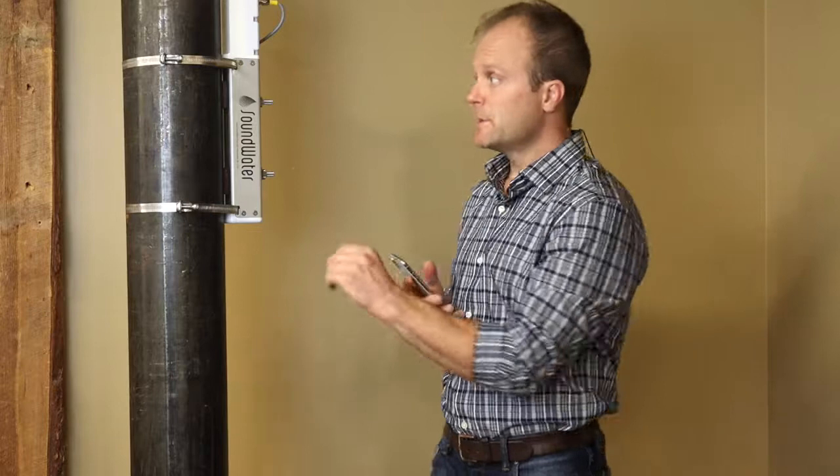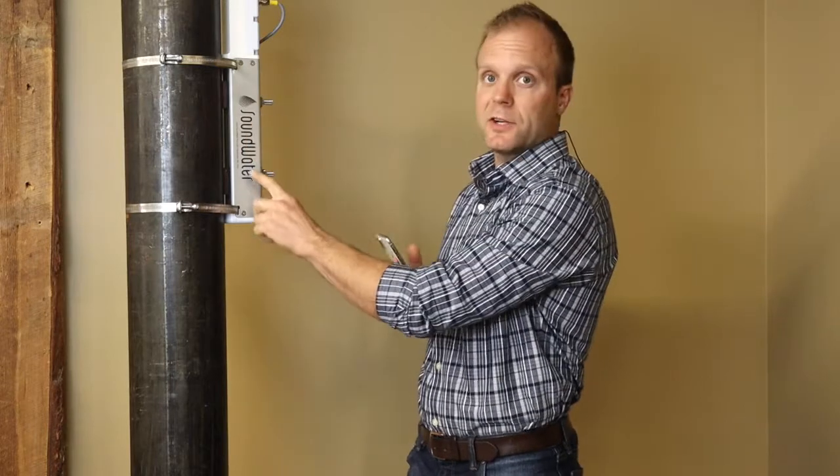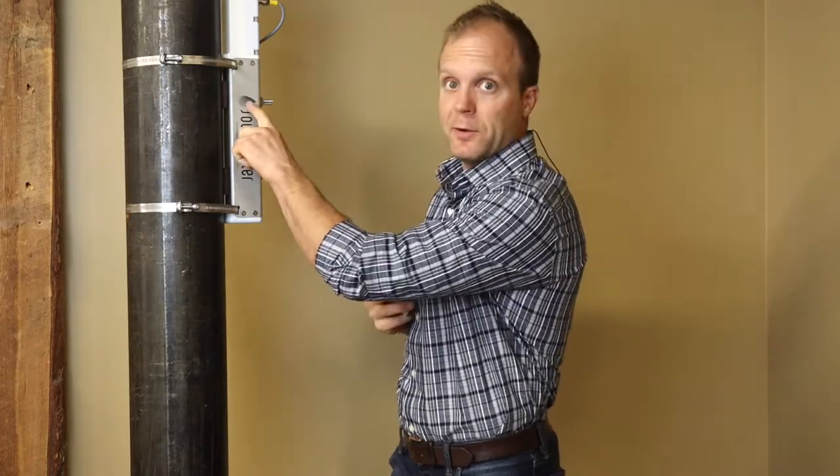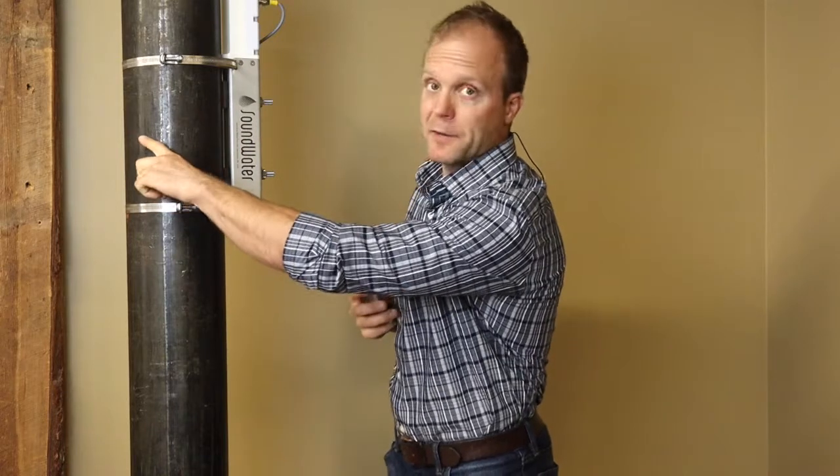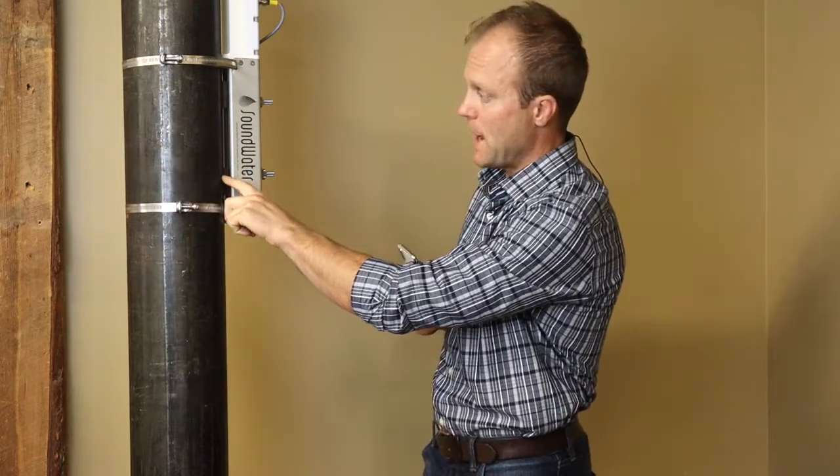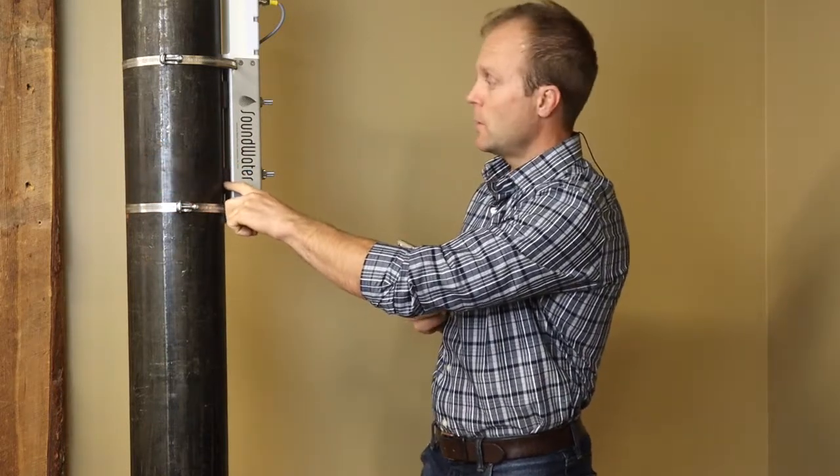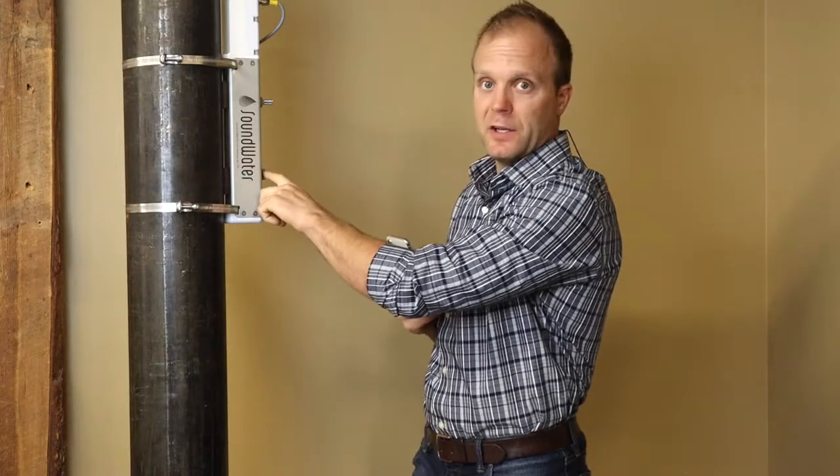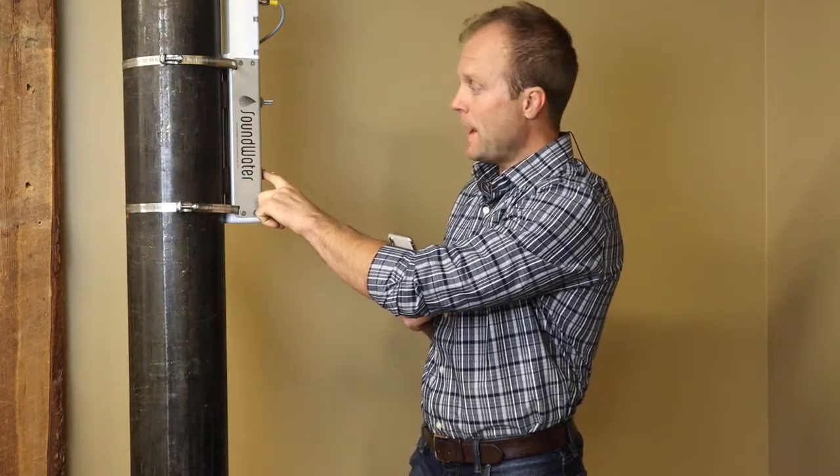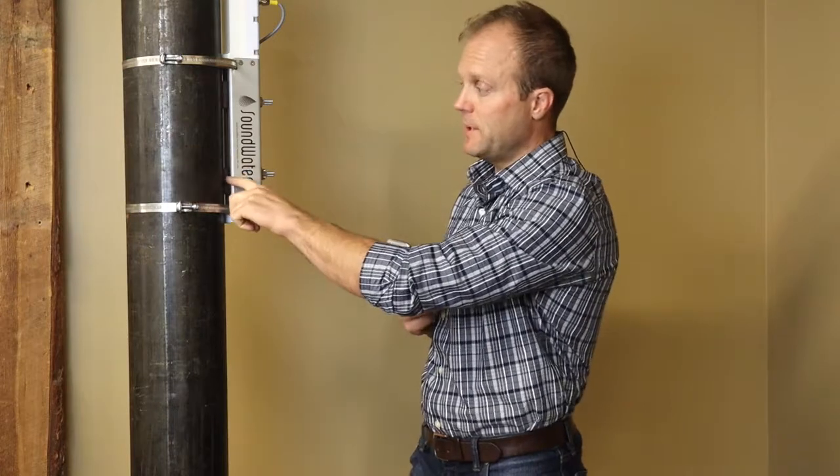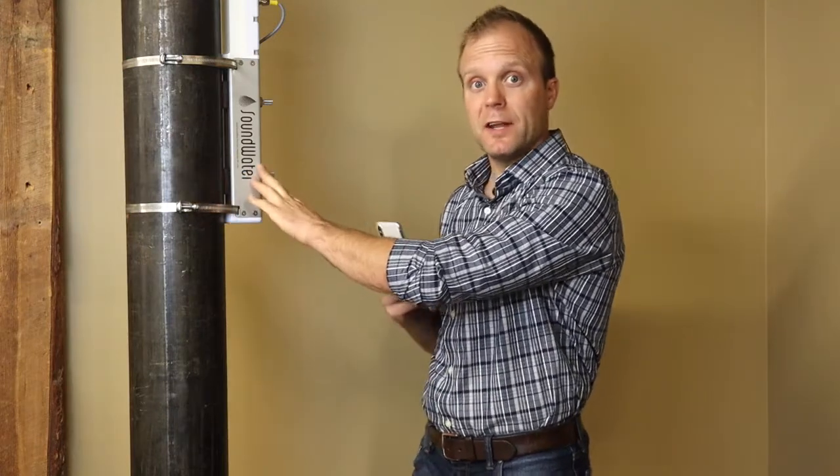And the reason for this is because there are two transducers here. One is transmitting ultrasound into the pipe. It bounces off the back side and the ultrasound comes back to the surface right here. So we need to position the second transducer at the right spot where the ultrasound is hitting the top of the pipe so it can receive it and make a flow measurement.